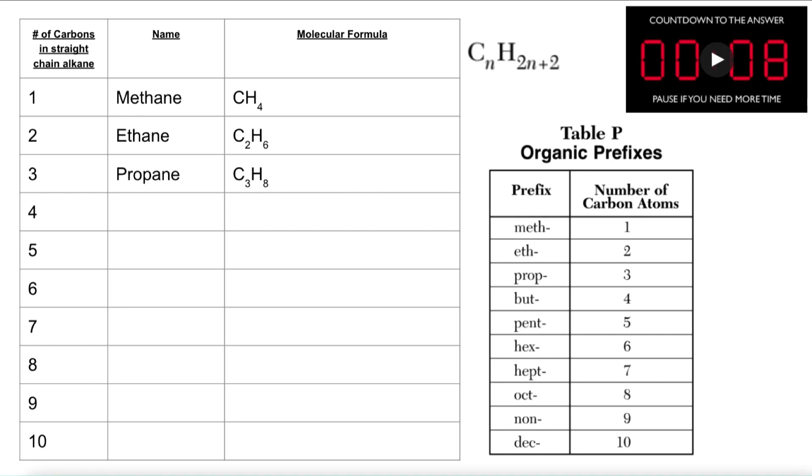So looking at four carbons in a straight chain alkane, we're really just going to run straight down the table of organic prefixes. Now the ending of an alkane always ends in -ane, A-N-E, and I use the prefix to get the beginning part.